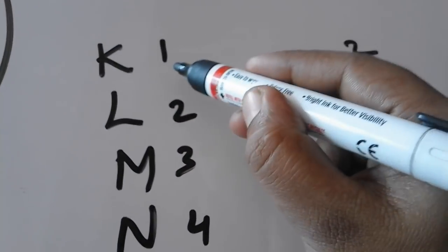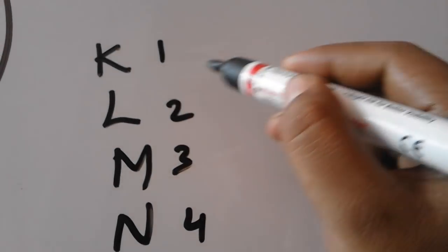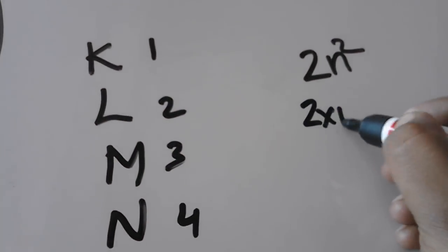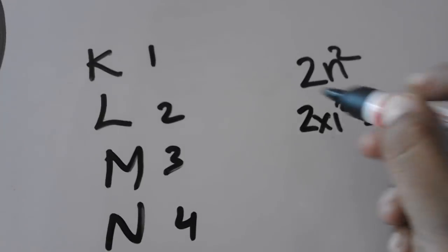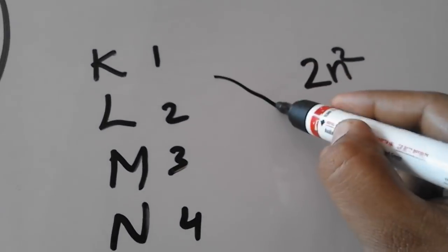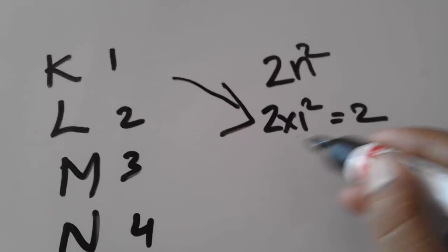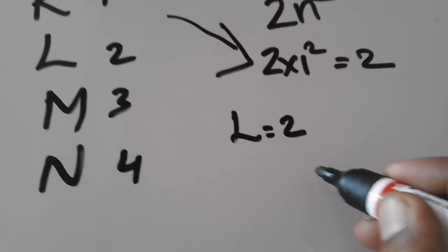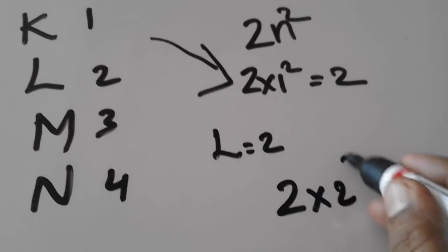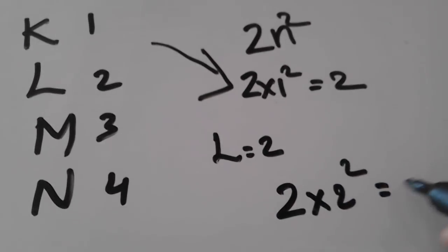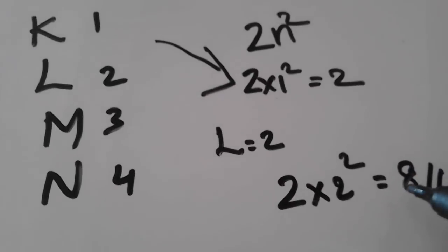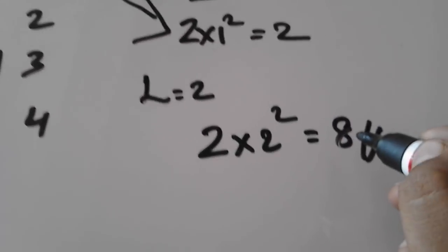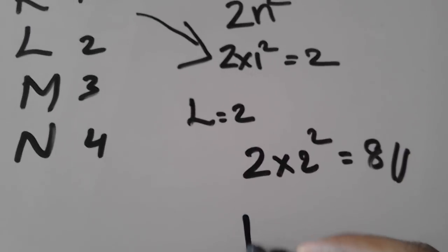Let's say K. 2n² is 2n². The electron count is given by 2n².